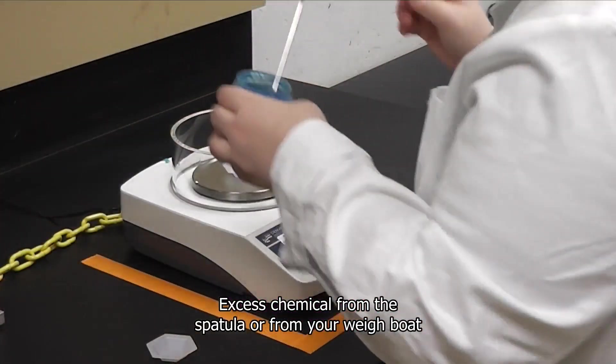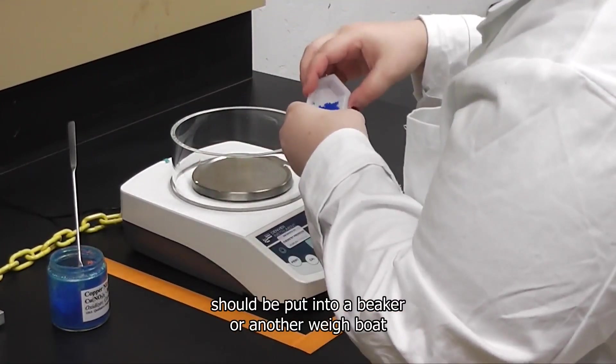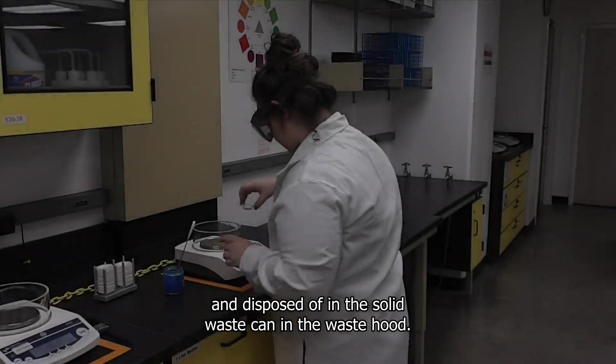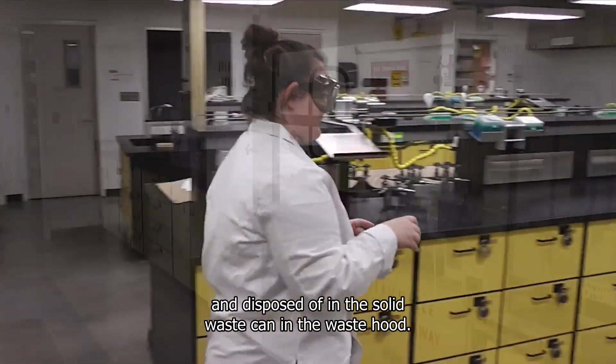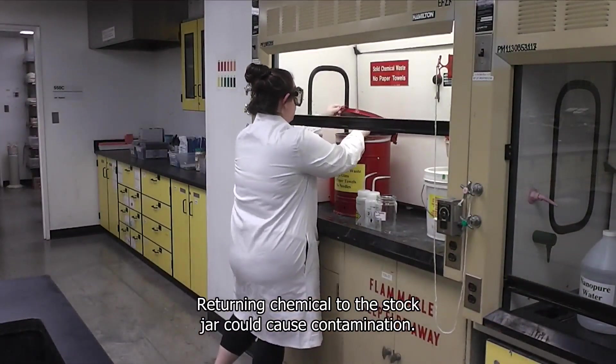Excess chemical from the spatula or from your weigh boat if you happen to get too much in there should be put into a beaker or another weigh boat and disposed of in the solid waste can in the waste hood. Returning chemical to the stock jar could cause contamination.